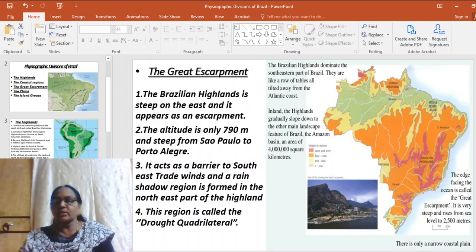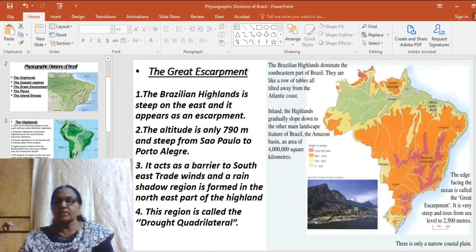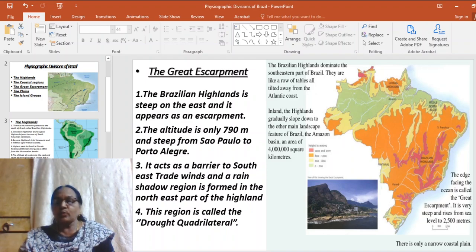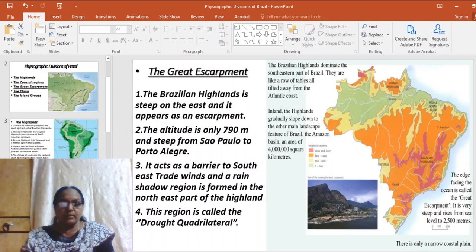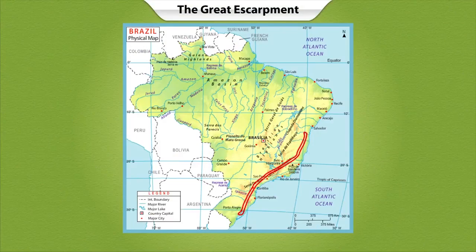The next physical feature is the great escarpment, situated along the southeast part of Brazil, with a height of about 790 meters, stretching from south to Porto Alegre. It greatly influences the climate of Brazil. The southeast trade winds moving over the South Atlantic Ocean give orographic rainfall to regions along the south and east. Further northeast it becomes almost dry — this rain shadow region is also known as the drought quadrilateral.